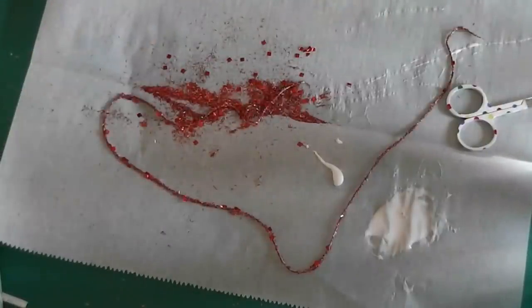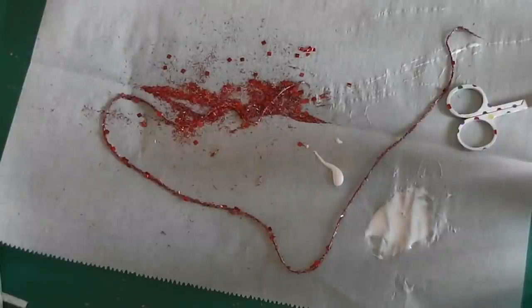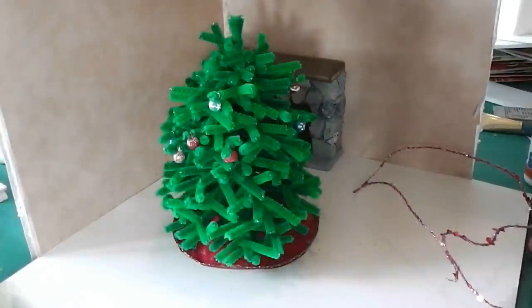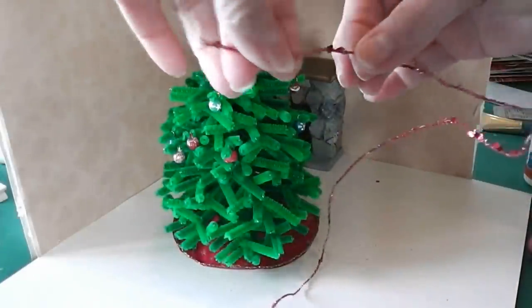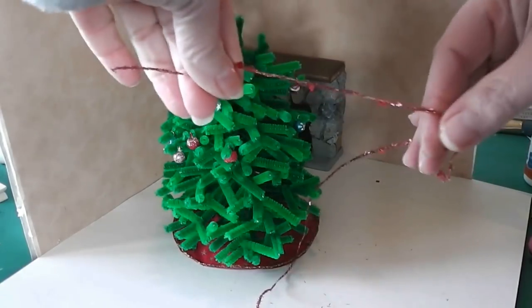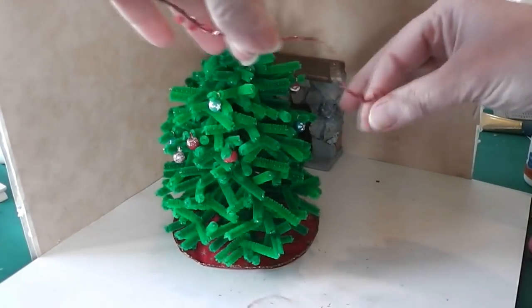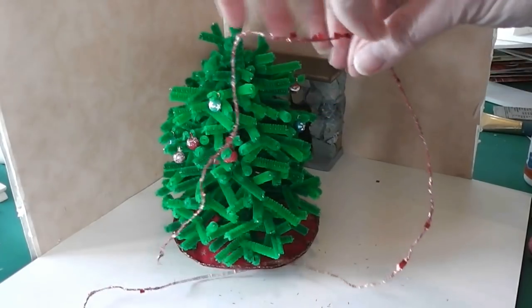Now this just needs to sit until it's completely dry. Once it's dry, I'll come back and we'll take a look at this on the tree. So our garland is dry and it'll get stiff and we're going to lose some glitter. That's to be expected. I think you can probably see how much glitter I'm losing.